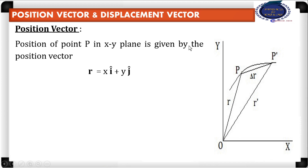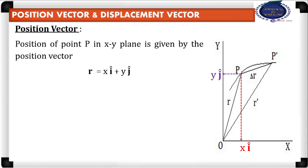The position of point P in the xy-plane is given by the position vector R, represented as x into i-cap plus y into j-cap. From point P, we draw a perpendicular to the x-axis, which represents the x-component, x into i-cap. Similarly, the y-component is obtained by drawing a perpendicular from point P to the y-axis, representing y into j-cap. So vector r equals the vector sum of the x-component x·i-cap and y-component y·j-cap.